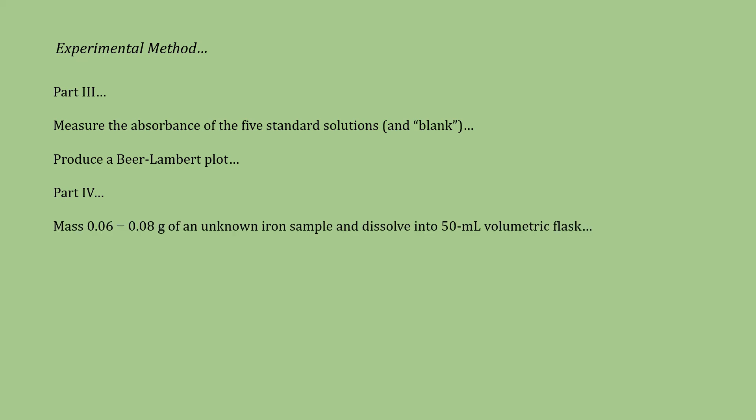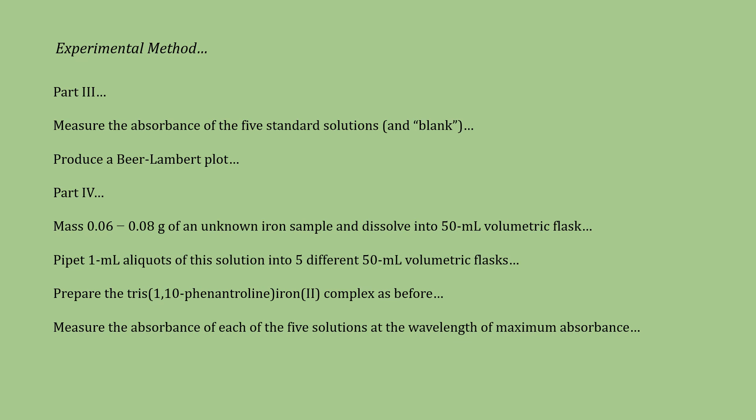In part four, we'll measure out between 0.06 and 0.08 grams of an unknown iron sample. And then dissolve that sample into 50 milliliters of deionized water. We'll pipette one milliliter aliquots of the solution into five different 50 milliliter volumetric flasks. Then prepare the complex as we did in part one. That is, we'll add ammonium acetate, hydroxylamine, and the 1,10-phenanthroline. With the tris 1,10-phenanthroline iron-2 complex produced, we then go about measuring the absorbance for each of these five different solutions at the wavelength of maximum absorbance. Once those five measured absorbance values are obtained, we get to go about doing calculations.